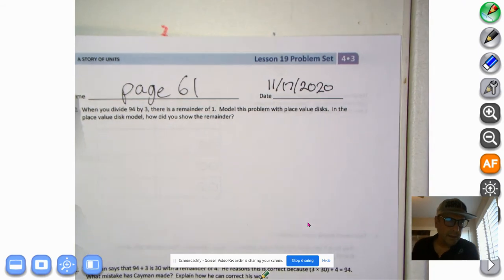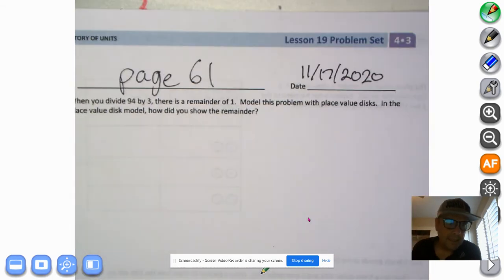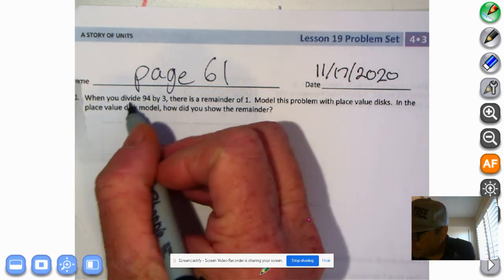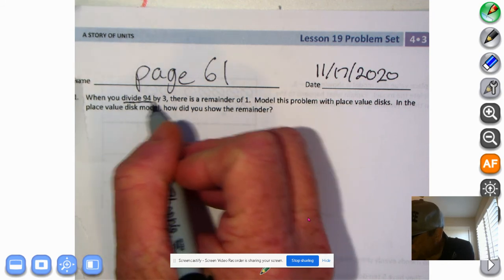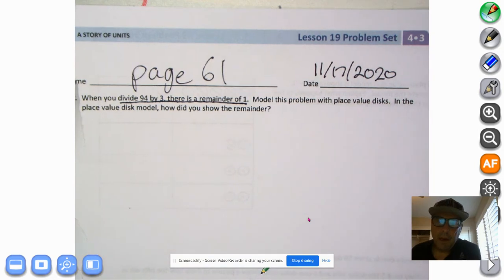Now that you've got your problem set, it says when you divide 94 by 3 there is a remainder of 1. They've already given us the answer here. We're gonna divide 94 by 3, there is a remainder of 1, that's what we know.